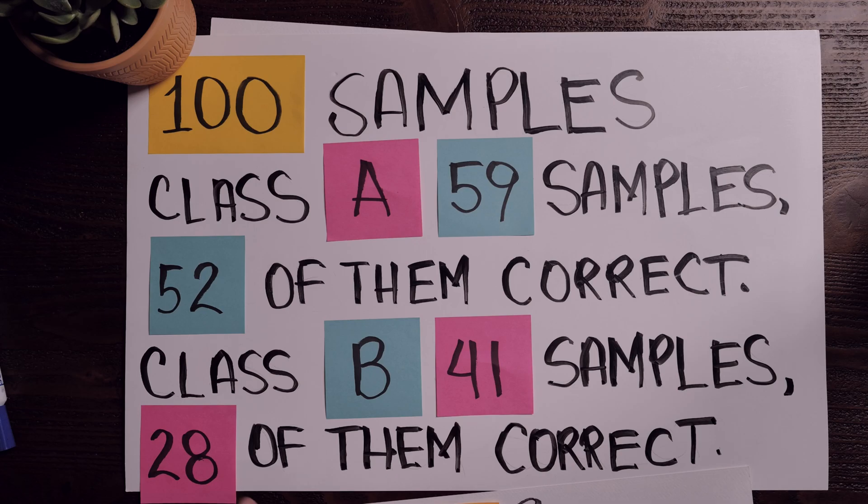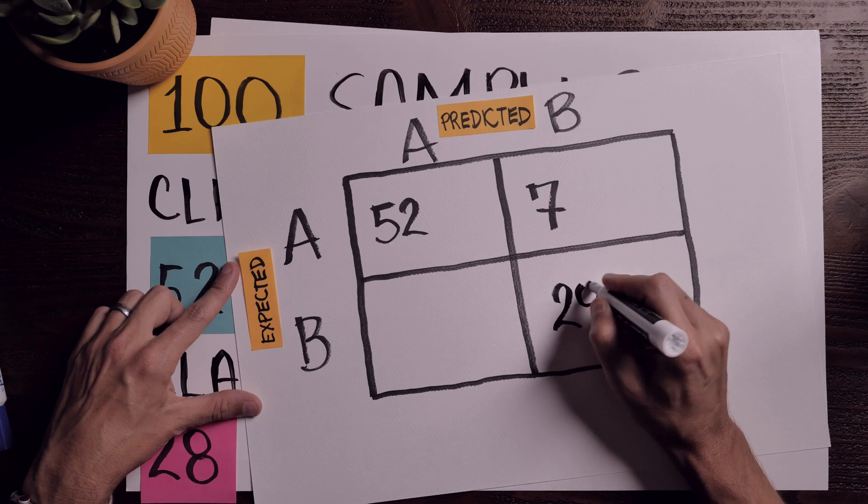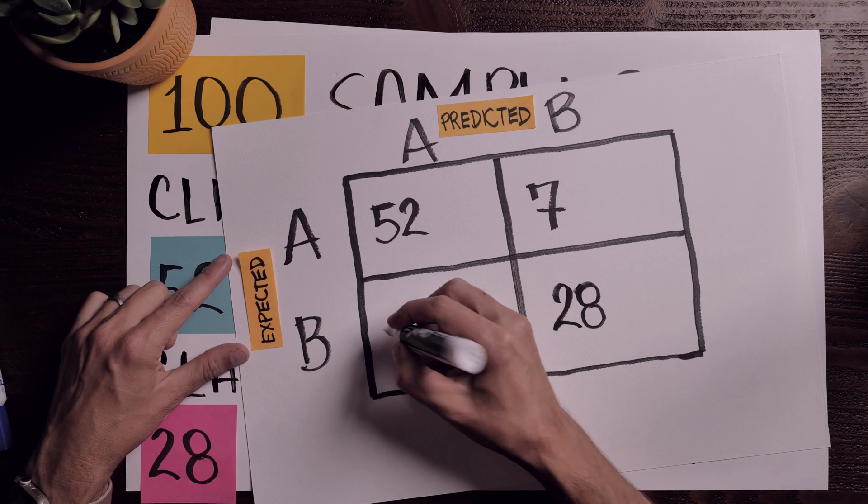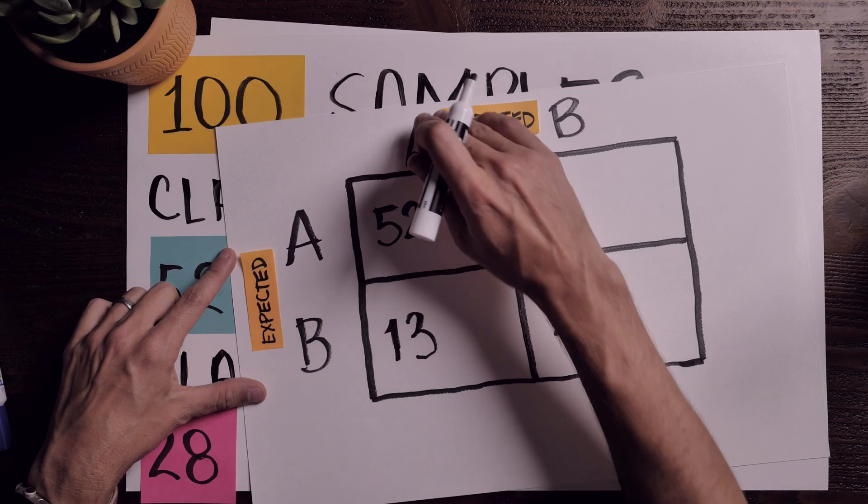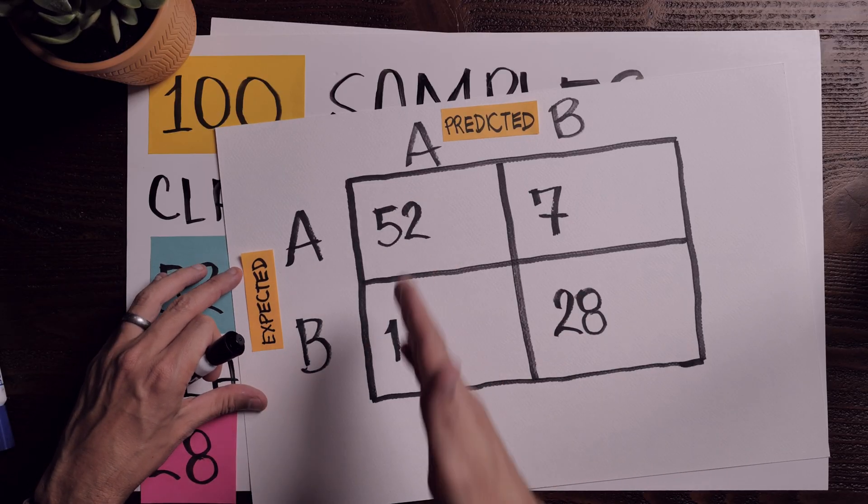Now let's do class B. How many samples did we expect from class B that were incorrectly predicted as class A? We got 28 samples correctly predicted as class B, and 41 minus 28 gives us 13 samples that we incorrectly predicted as class A. If you need to, please pause and rewatch the questions I asked in order to determine where to put each value in the confusion matrix — that's critical to understanding how to read them.